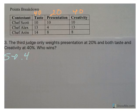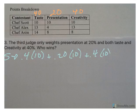...we start with Scott, 40% times 10 plus 20% times 10 plus 40% times 10 gives Scott a score of, surprisingly, 10.